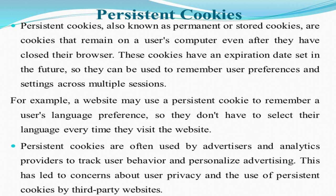Suppose right now I am logging in to my Gmail account — this is essentially sending a message to the server that I have to be remembered and my login credentials have to be saved in a persistent cookie and then saved on my machine. A website may use a persistent cookie to remember a user's language preference so that the end user is relieved from logging in and providing credentials again and again. Persistent cookies are often used by advertisers and analytics providers also to track user behavior and personalize advertising.